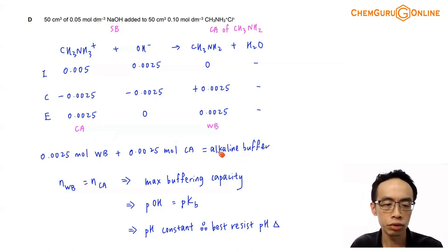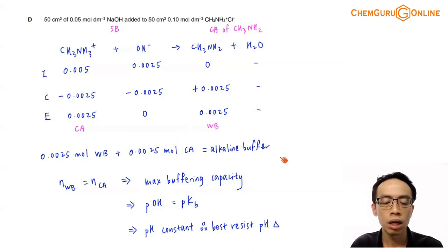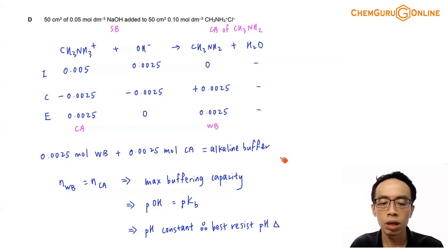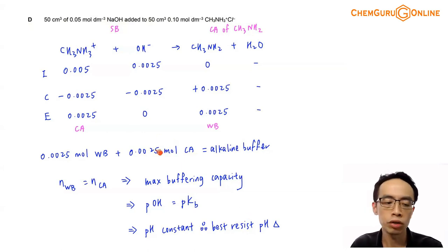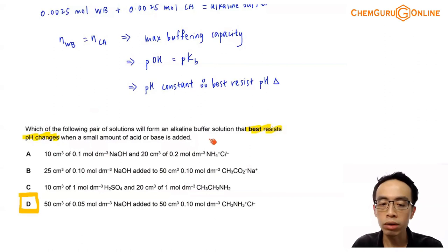The number of moles of weak base and conjugate acid is exactly the same, so we should recognize that this buffer is at its maximum buffering capacity, where pOH equals pKb. Therefore pH will be a constant term. Since pH is a constant, a buffer at its maximum buffering capacity will function at its best — it can best resist changes to pH. So we have determined that the alkaline buffer solution that can best resist pH changes is solution D.